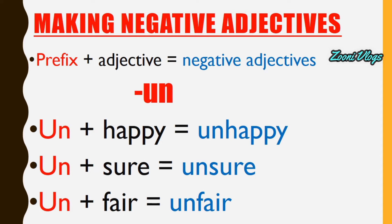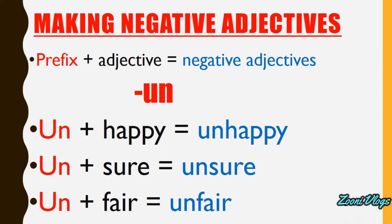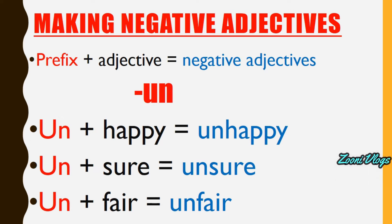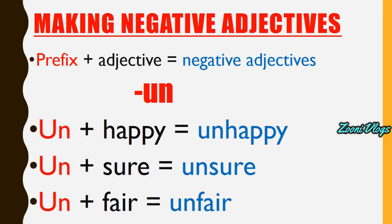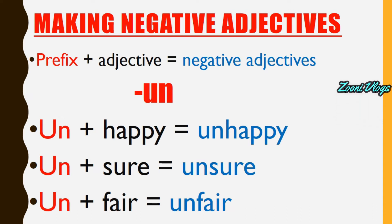For example, 'un-' plus 'happy' — the root form is 'happy' — equals 'unhappy.' The opposite of happy is unhappy. Prefix 'un-' plus 'sure' gives 'unsure.' 'Unfair' — the opposite of fair is unfair.